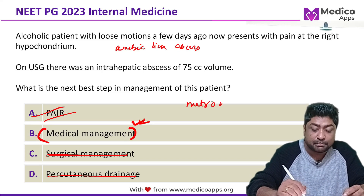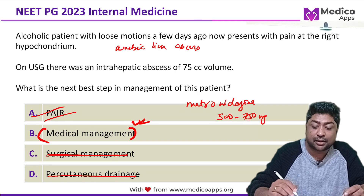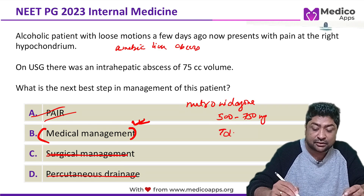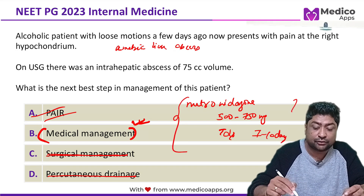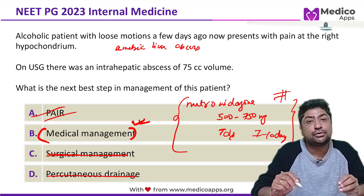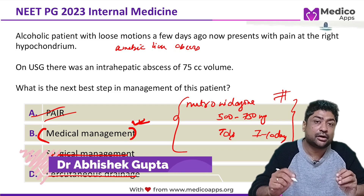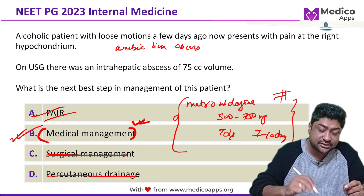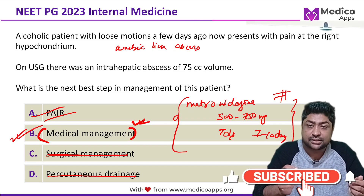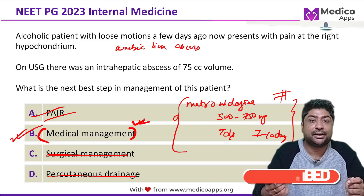The correct answer is medical management. The drug of choice is metronidazole at a dose of 500 to 750 milligrams, thrice a day for 7 to 10 days, which can be extended up to 14 days. This is an uncomplicated amoebic liver abscess, and based on the history, medical management is the correct first approach.